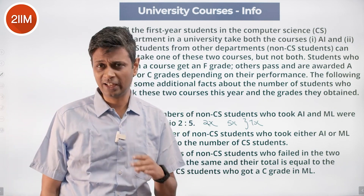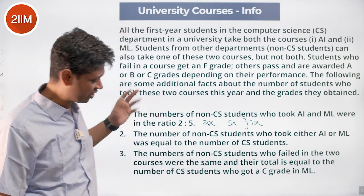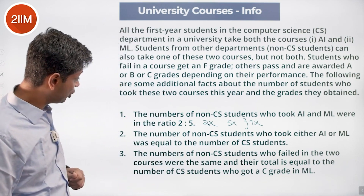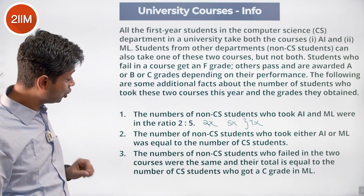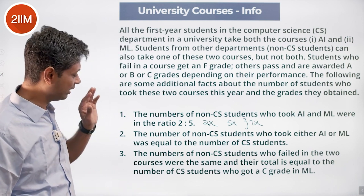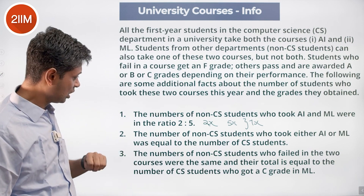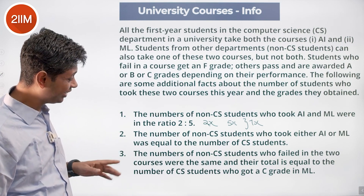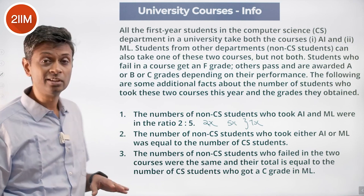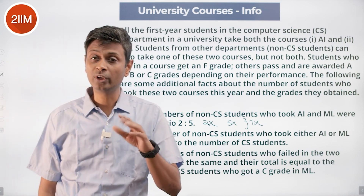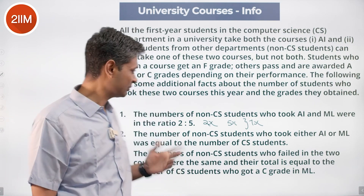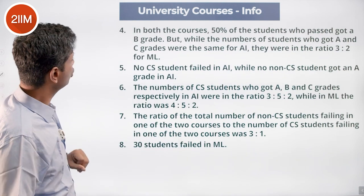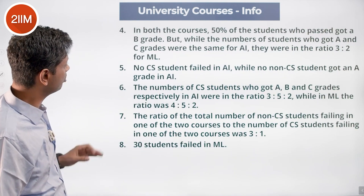When the first two constraints are grabbed in the same variable, the numbers of non-CS students who failed in the two courses are the same, and their total is equal to the number of CS students who got a C grade in ML. We're already going into territory that's hard to hold in your head. In both courses, 50% of the students who passed got a B grade.